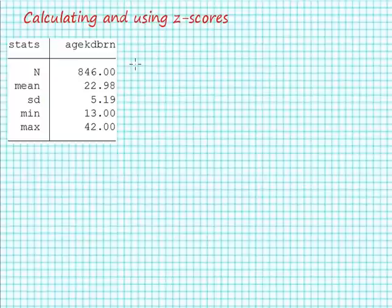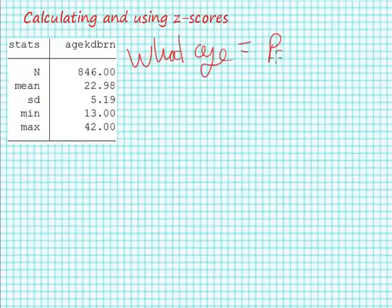For this problem, we're going to solve for a percentile. We're going to ask what age is equal to the 90th percentile. To do this, let's review our z-score formula. We know that z is equal to y minus y-bar over s sub y.